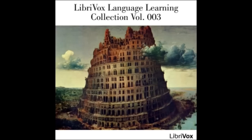Third person reflexive singular: nominative wanting; accusative ἑ (himself); genitive οὗ (of himself); dative οἷ (to himself). First person plural: nominative ἡμεῖς (we); genitive ἡμῶν (of us). Third person plural nominative: themselves.